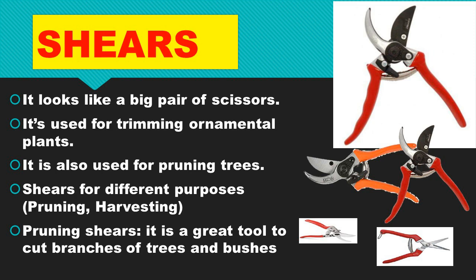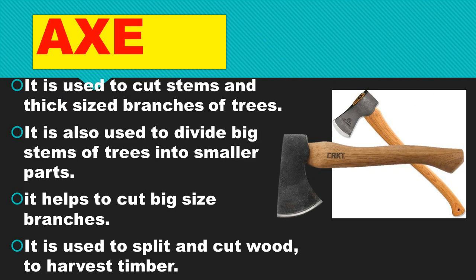The axe is used for cutting stems and thick branches of trees. It is also used to divide big stems of trees into smaller parts. It helps to cut large branches and to split and cut wood to harvest timber.